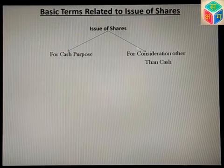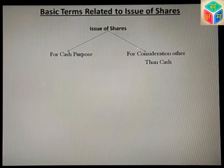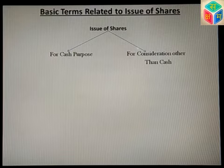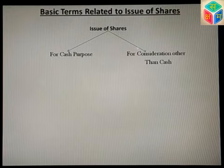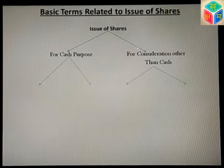When you issue shares in the market and you need cash, that is issue for cash consideration. The second type is where you don't need cash but need assets — that is issue for consideration other than cash. These two cases have separate entries and accounting treatment.